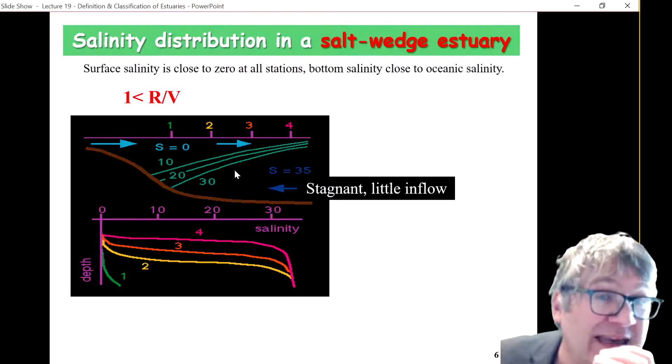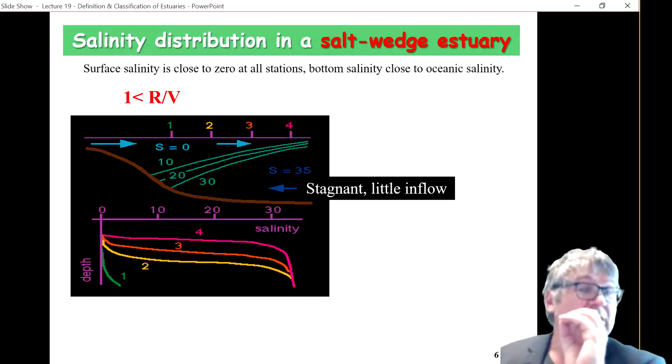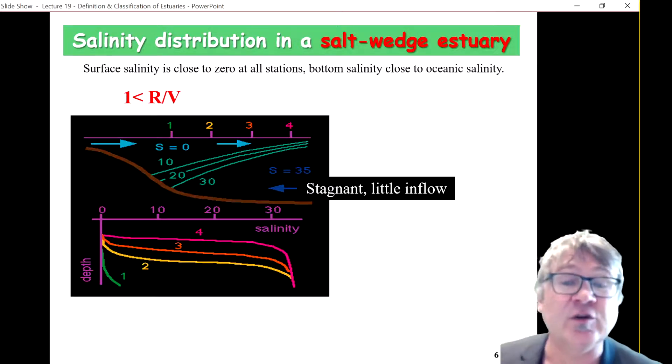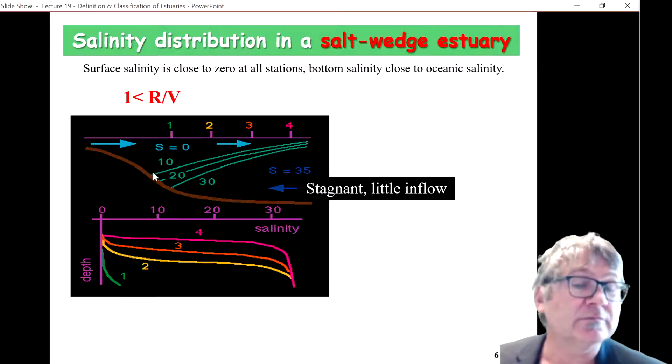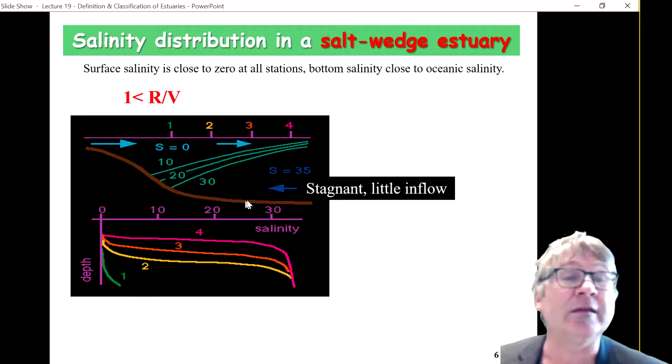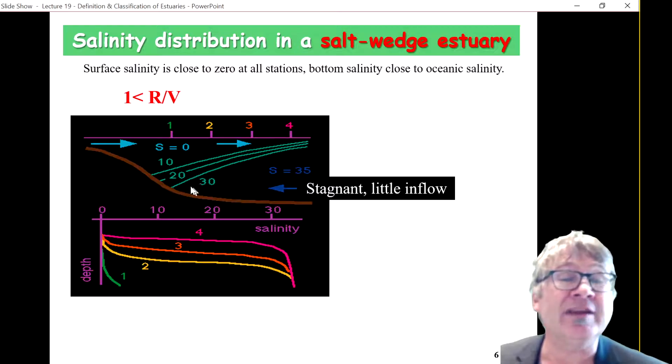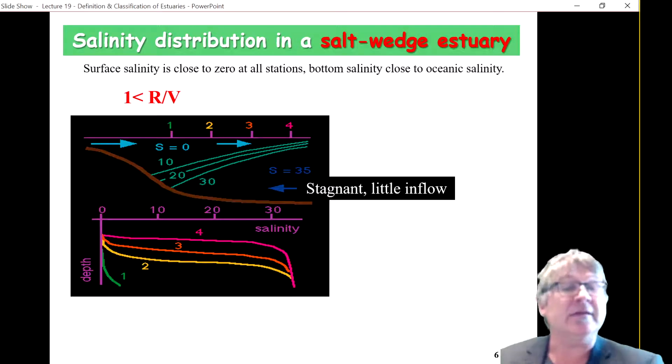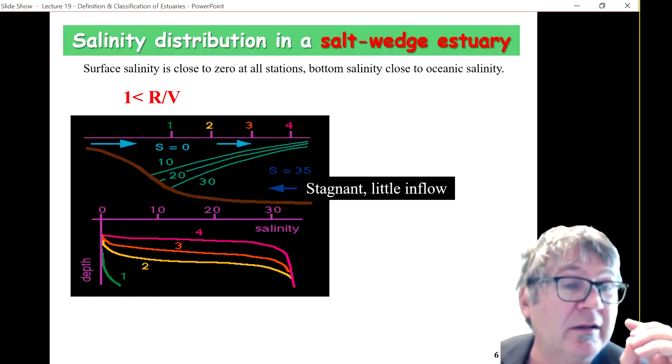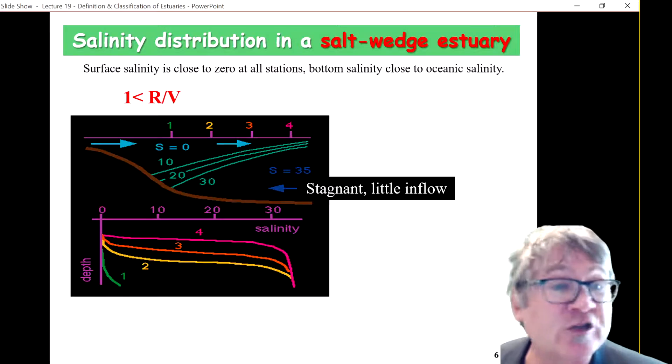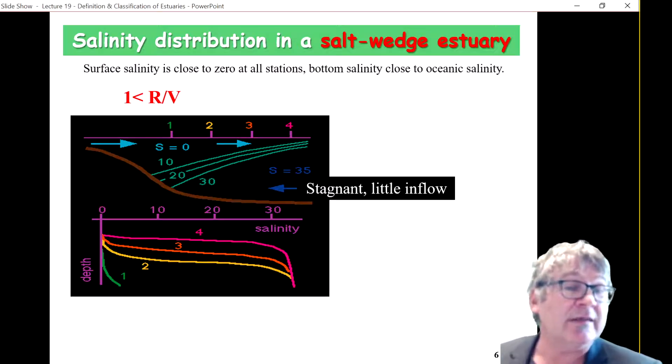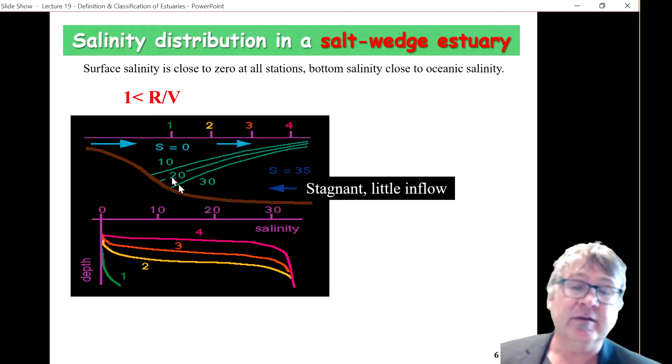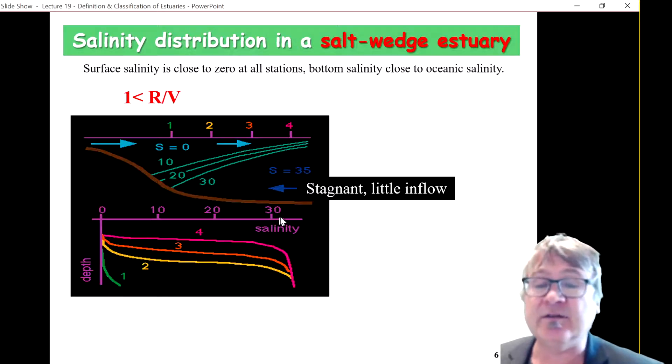There are species which can adjust to changes and they live in the transition zone. This is the so-called brackish water, the transition zone between marine and freshwater environment. And then there are indeed species that can, like salmon, that can actually live in both marine and freshwater environment.